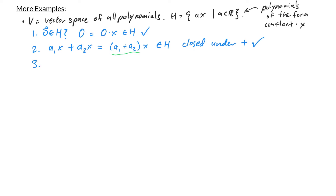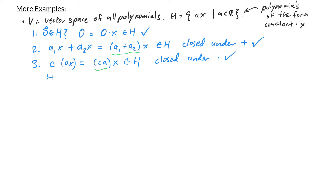For the third condition, is H closed under scalar multiplication? Let C be any scalar and A·x be an arbitrary polynomial in H. Their product is C·A·x. Since C·A is just some constant, we have a constant times x, which means the product is in H. H is closed under scalar multiplication. Since all three conditions are satisfied, H is a subspace of V.